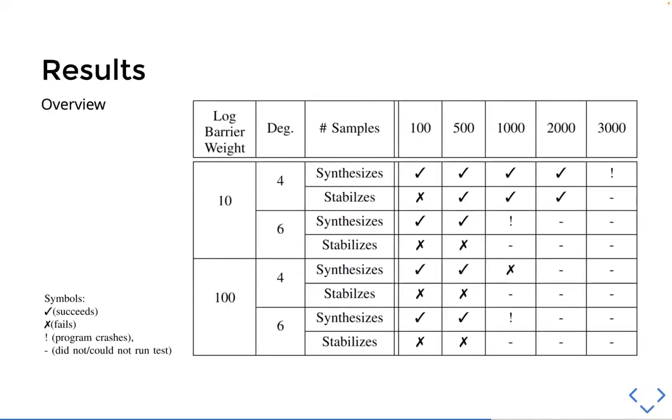So onto the results, just as an overview, we found that when using a small amount of smoothing, a higher degree monomial basis was required to enforce the contraction condition across all the samples. And since the dynamics were less smooth, a greater density of samples was required in order for the contraction condition to hold around the desired trajectory. And this can be seen from the results in this table where even though we're able to synthesize the DCCMs for 500 samples for both log-barrier weights, the DCCM for log-barrier weight 10 was able to stabilize the system, while the DCCM for log-barrier weight 100 and same number of samples was not able to stabilize the system.